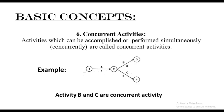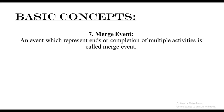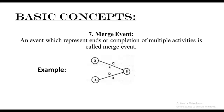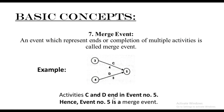That was concept number six. Next we have the merger event. An event which represents the end or completion of multiple activities is called the merger event. Merger is when you're merging two or more activities to one single end event. For example, we have activity C and activity D — two different activities — and their arrows have been merged to one single event, meaning that is the completion of both. Activity C and activity D end in event number five, hence event number five is the merge event.